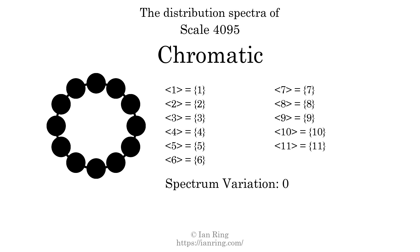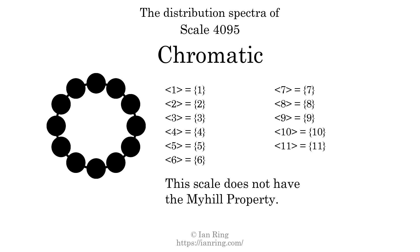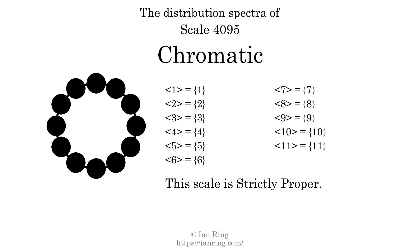The variation of this scale is exactly zero, which indicates that the scale is perfectly even. The highest spectrum width is zero. Since it is less than or equal to one, that means this scale is maximally even. If every spectrum has exactly two specific intervals, we call that the Myhill property. This scale does not have the Myhill property. Since each specific interval appears in only one spectrum, this scale is strictly proper.